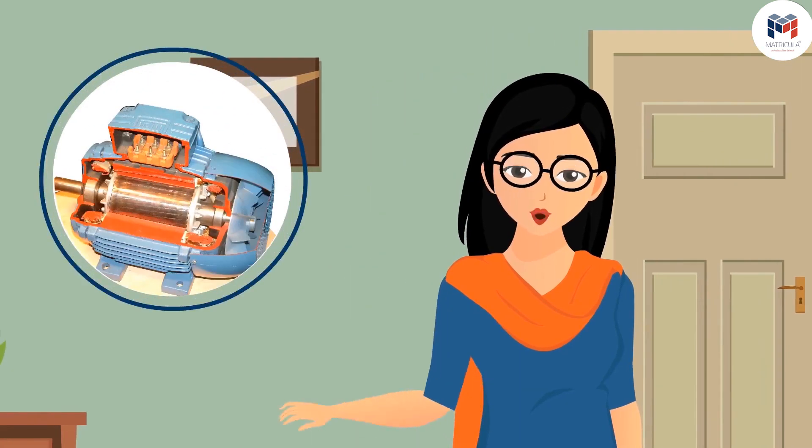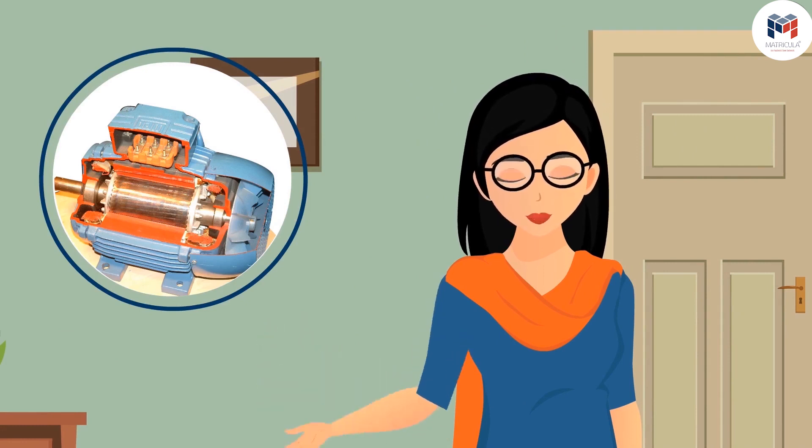But it rotates when electric current flowing through a conductor is placed in the magnetic field. If you look at the cross section of this motor then loads of wire and magnets can be seen. Let us understand its working closely.